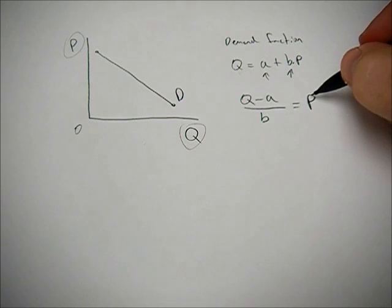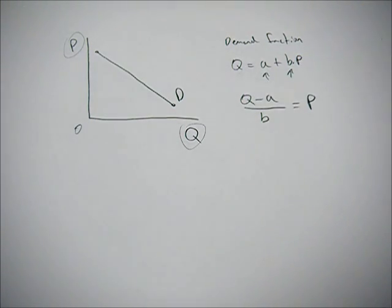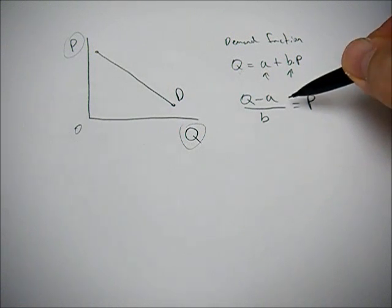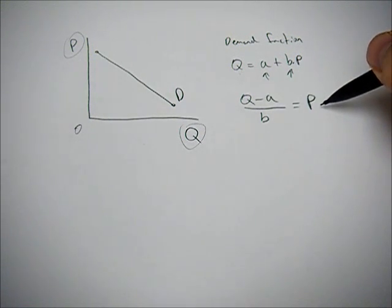So now we're saying that price is endogenous and Q is exogenous. Because Q is determining what our P is.